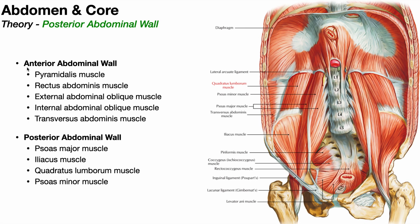In the previous videos of this playlist, we've extensively discussed the muscles that make up the anterior abdominal wall — the pyramidalis, rectus abdominis, external and internal abdominal obliques, and the transversus abdominis muscle. Now we're going to shift gears and talk about the muscles of the posterior abdominal wall. We'll begin by discussing the psoas major and the iliacus muscles, and in the next few videos we'll cover the quadratus lumborum and the psoas minor, which may or may not be present in some individuals.